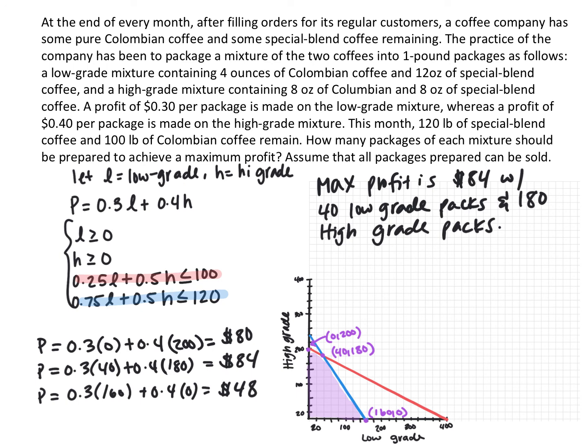For linear programming, you have a linear function to maximize or minimize and a set of constraints forming a system of linear inequalities. Graph the system of inequalities; the feasible points are all the corner points of your solution set. Then plug those corner points into your objective function to find the actual maximum or minimum.